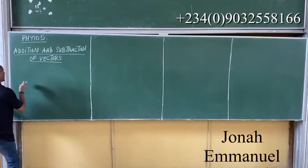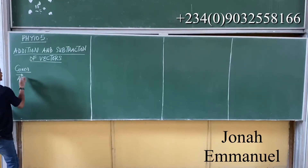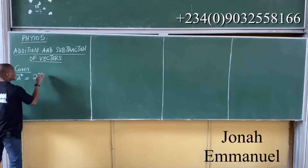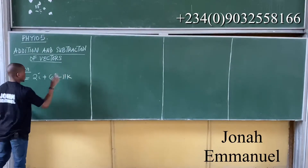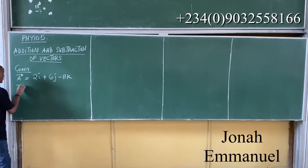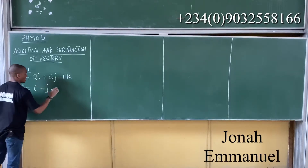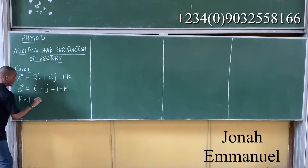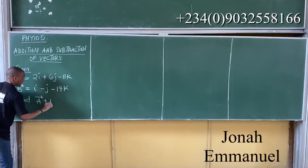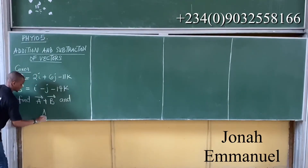For instance, if I'm given Vector A equal to 2i plus 6j minus 11k, and Vector B equal to i minus j minus 14k, and I'm asked to find A plus B and A minus B.